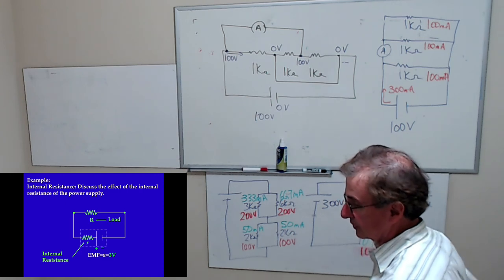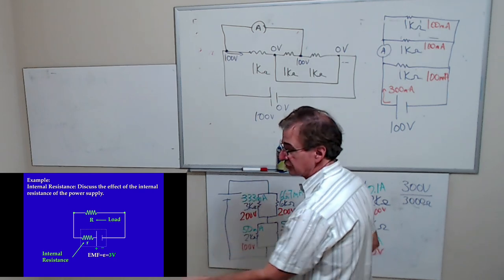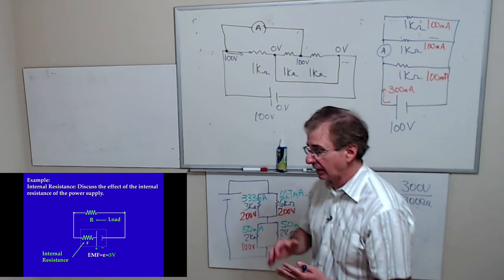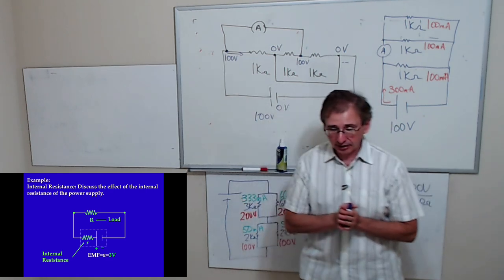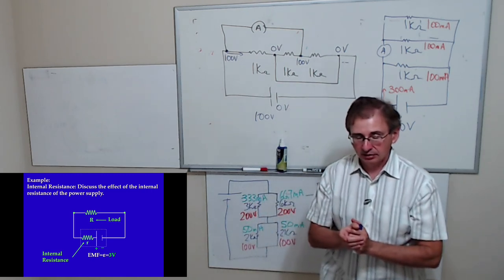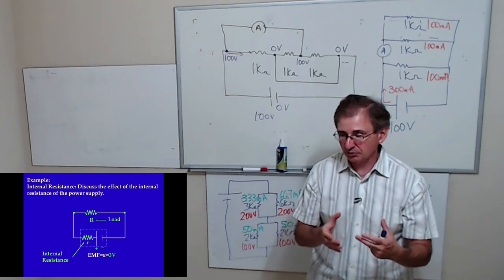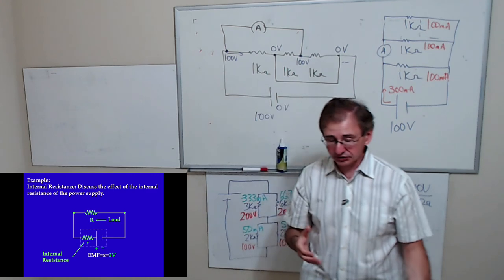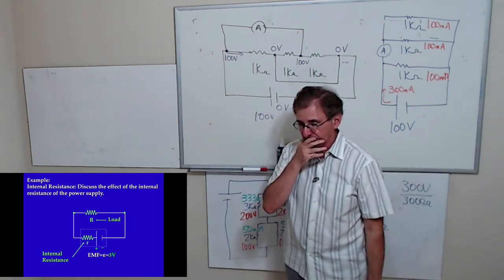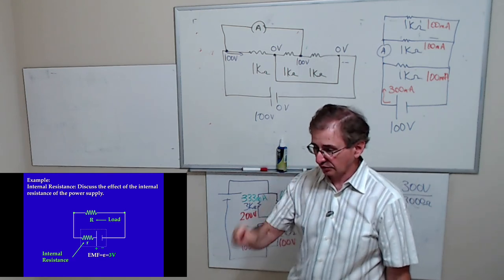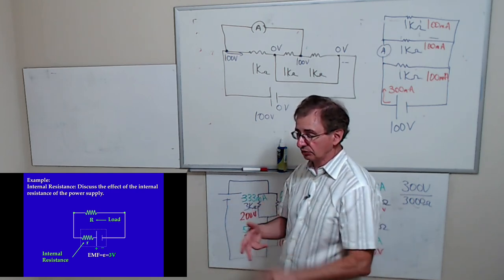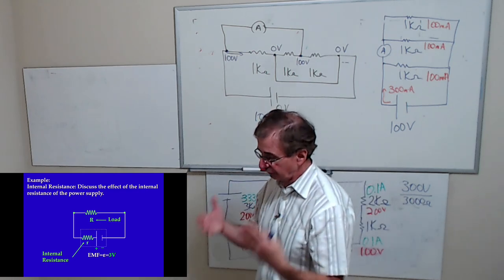I want to talk a little bit about internal resistance. We talked about this in the previous chapter but didn't do any problems, so I'm going to look at the effect of the internal resistance of a power supply. In a power supply, that little r is small - there's not an actual resistor in the power supply; we draw the r there to represent the overall effect of the power supply on the circuit. It acts as if there's another resistor in the circuit, and it's always in series with the rest of the circuit. As a result, the voltage applied to the load is lower than the power supply voltage - this is called a voltage divider circuit.